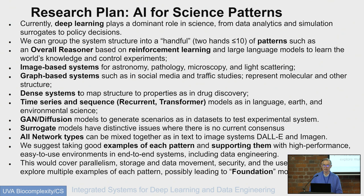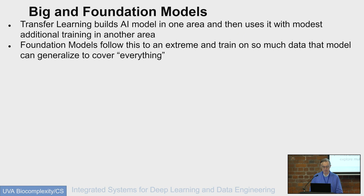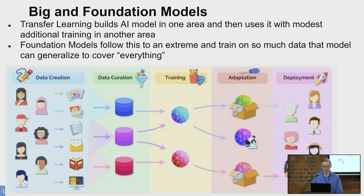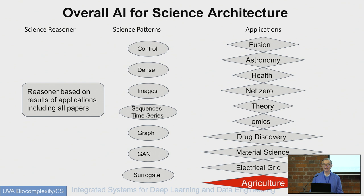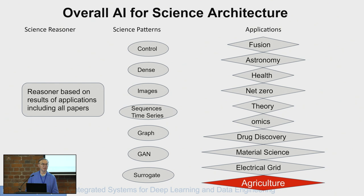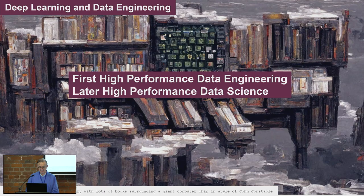One I know best is time series. You can try to build a universal time series model and map it to lots of different fields. Stanford came up with this picture of what a foundation model is, which takes lots of data, learns a model, and then adapts it to different applications. Agriculture certainly has lots of image-based patterns and lots of time series, so images and time series were particularly important in that area.